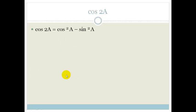So cos 2A is cos²A minus sin²A, right? But we know that cos²A plus sin²A equals 1. Therefore, we could write that 1 minus sin²A equals cos²A, right?